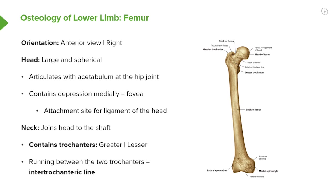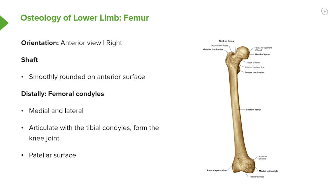The neck joins the head to the shaft. Here we can see the neck of the femur, and it contains two trochanters — a greater and a lesser trochanter, which are clearly seen on the posterior view. Running between the two trochanters on this anterior aspect we have the intertrochanteric line.